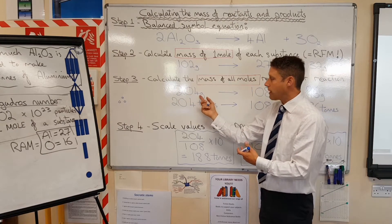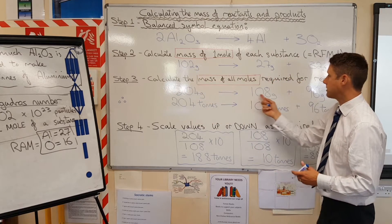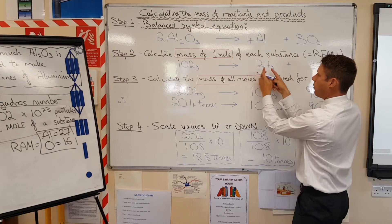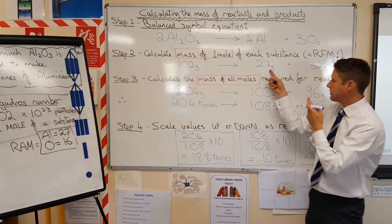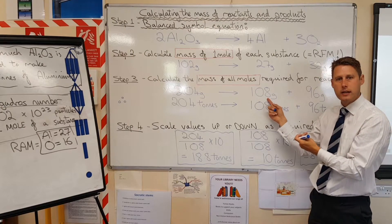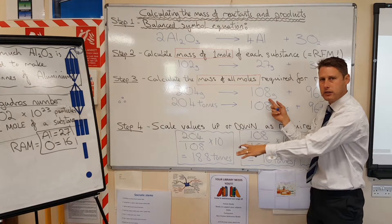204 grams are required in order to produce four moles of aluminum. Now, one mole of aluminum is 27 grams. Four lots of that, four moles, will be 108 grams. Just ignore everything below here just now.